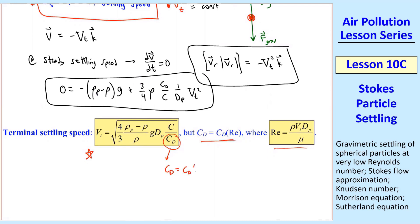cd is a function of Reynolds number, and Reynolds number is a function of vt. So you're trying to solve for vt on the left, but there's a vt under the square root in this very complicated equation on the right because of the Reynolds number effect.